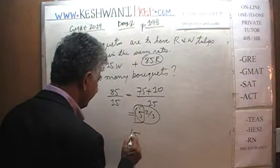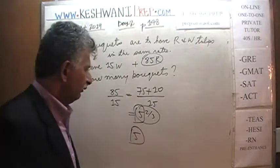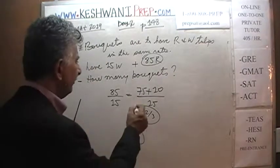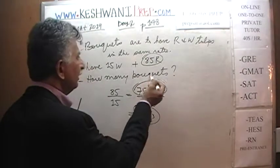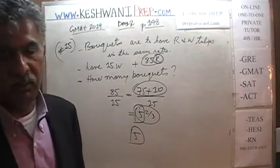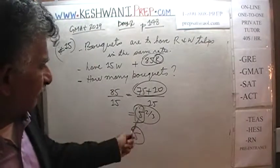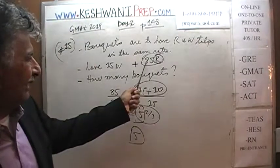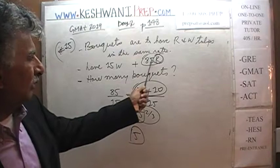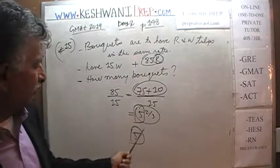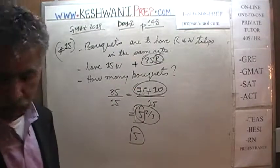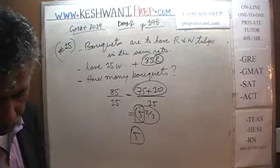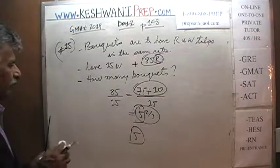Five is the most that they can sell, because they don't have enough of the red ones to finish the job. If we had 90 of them — if we had five more red tulips — we could have made one more bouquet, but we cannot. We only have 85 of the red ones.